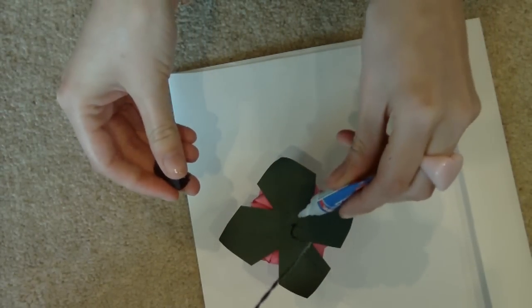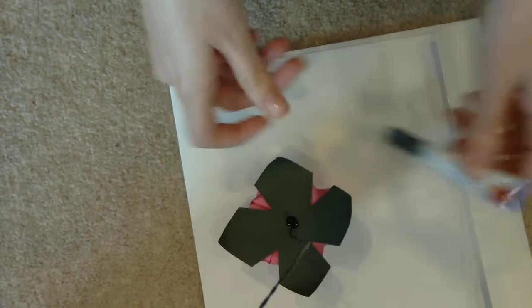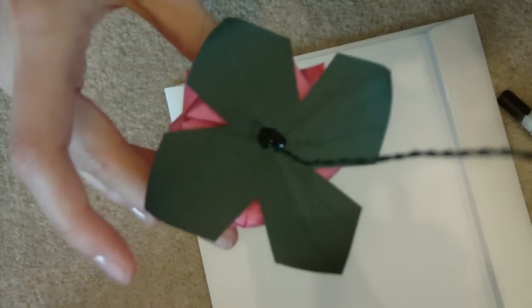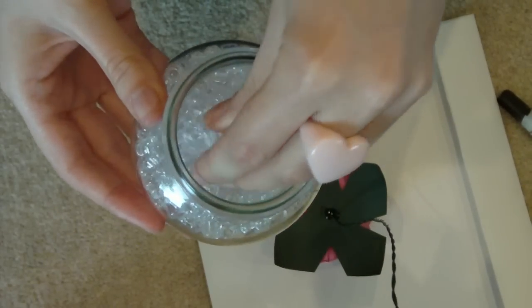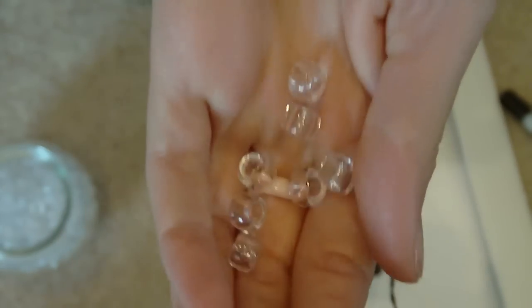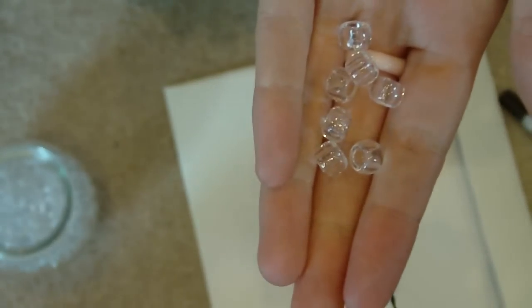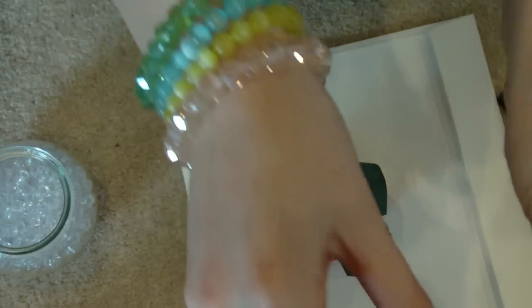And then you put more super glue around the base. Like so. And then you take your beads that I told you to get. These are just regular clear beads. You can get them at any craft shop. You could do them the same color as your rose or the green that you're using. I did clear because I was doing lots of different types of roses.